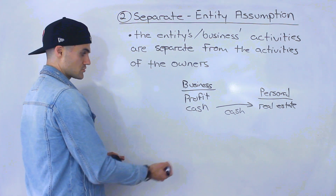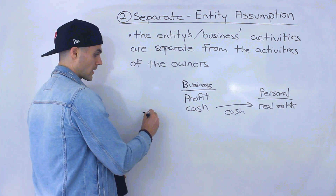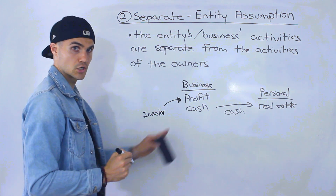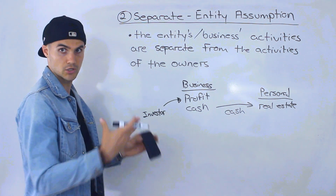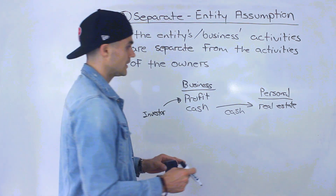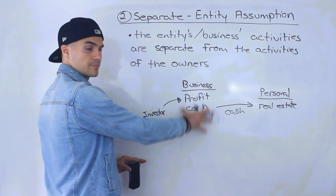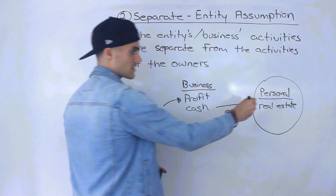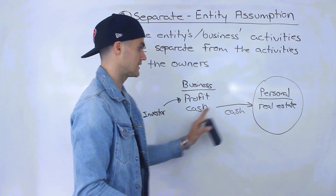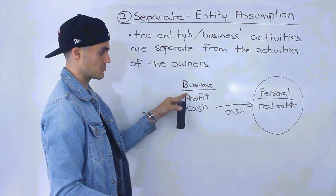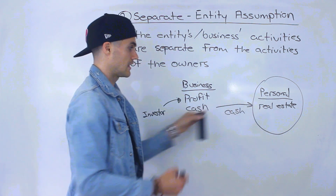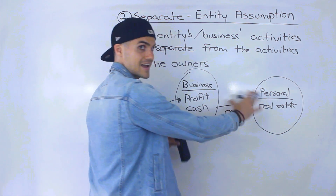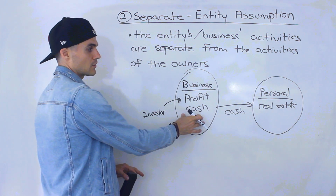Now let's say there are external users, whether they are investors or creditors. Let's say an investor is thinking about investing in your business or buying your business outright. When you're showing them the financial information for your business, you cannot mix your personal stuff. You can't bring in your personal real estate and say your business has this profit, this cash, and this real estate. They have to be separated — you'd only be showing the business portion. The personal side is separate and can't be mixed in with your business.